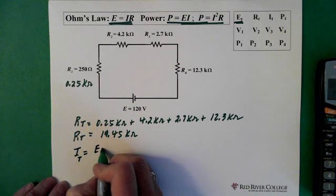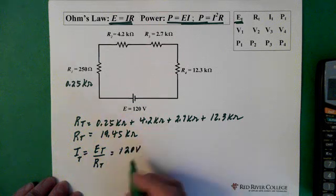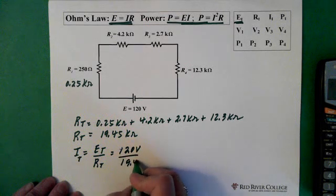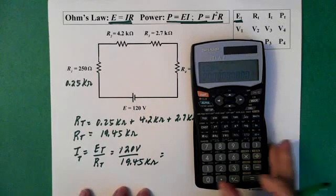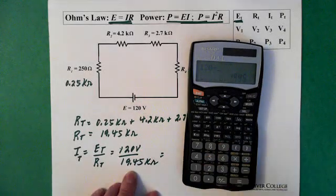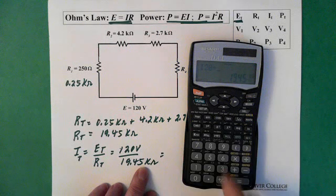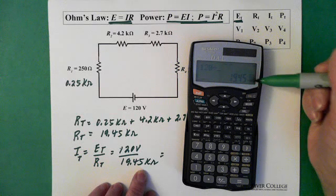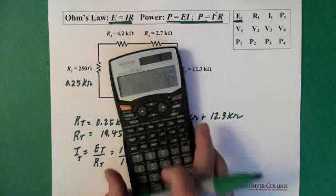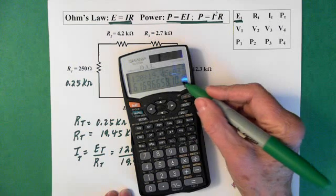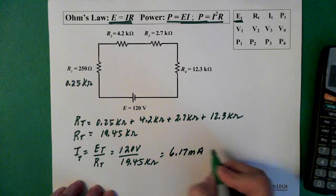I total equals our total voltage divided by our total resistance. Total voltage is 120 volts, and total resistance is 19.45 kilohms. So we take our 120 and divide it by 19.45. The K for kilo, we push the exponent button, exponent 3, that gives us 19.45 times 10 to the 3. We divide it and we end up with 6.17. So 6.17, and we have 10 to the minus 3 here, which tells us it's milliamps. 6.17 milliamps, and there's our current.